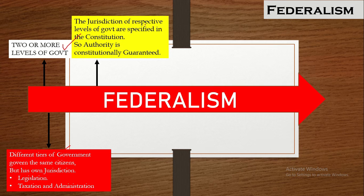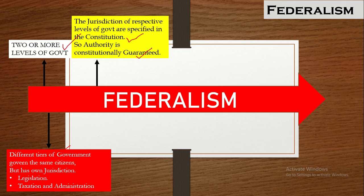Moving to the third feature: the jurisdiction of the respective levels of governments are specified by the constitution. They are constitutionally guaranteed and don't have areas where they clash with each other. They have clearly specified areas of jurisdiction within the constitution, so the areas of jurisdiction are constitutionally guaranteed.